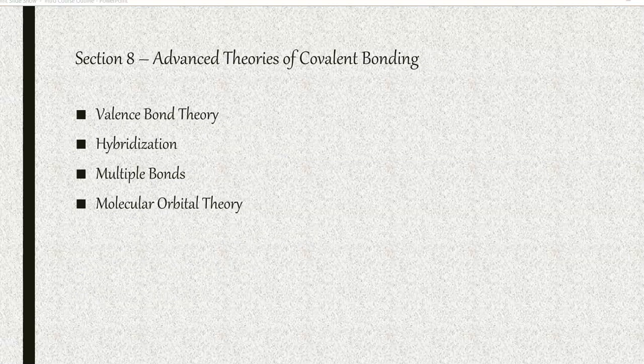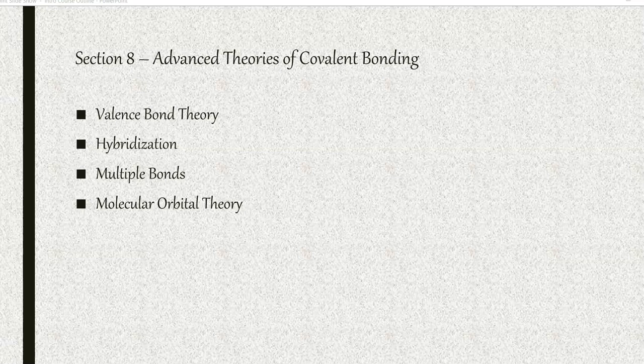Moving on to section eight, we'll be looking more at covalent bonding, specifically the theories valence bond theory and molecular orbital theory. Along the way, we'll look at hybridization and multiple bonds as they apply to valence bond theory.